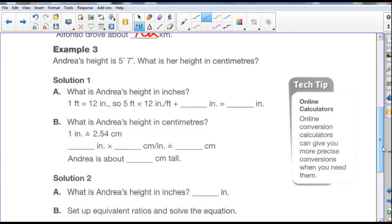Example number three, Andrea's height is 5 feet 7 inches. What is her height in centimeters? Well, solution number one, what is Andrea's height in inches? 1 foot is 12 inches, so 5 feet times 12 inches is 60 inches. 5 times 12 is 60, plus we have, she's 5 foot 7, so we add another 7, so 60 plus 7 is 67 inches tall. That's how tall she is, that's what 5 foot 7 is.